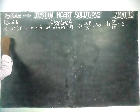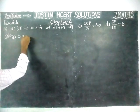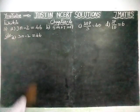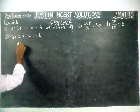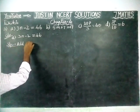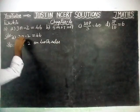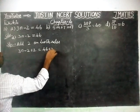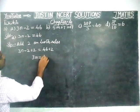First, we are going to solve the solution for part A. The equation is 3n minus 2 is equal to 46. Here, we have to do two steps. In step 1, we are going to add 2 on both sides to cancel this constant. So, 3n minus 2 plus 2 is equal to 46 plus 2. Minus 2 plus 2 gets cancelled, giving us 3n equal to 48.